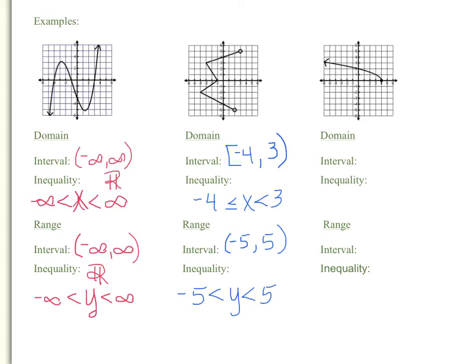Now let's look at the third graph. In this graph, we see the curve starting at a specific point and going upward and leftward infinitely. So the domain starts at negative infinity, and going from left to right, it goes to where x equals 4. Because it's a filled-in dot, that means x not only goes up to 4 but also equals 4, so we end it with a bracket. We pronounce this as 'the interval from negative infinity through positive 4.' Using the word 'through' means it does include the actual point of 4. In inequality notation: x is greater than negative infinity, but less than or equal to 4.